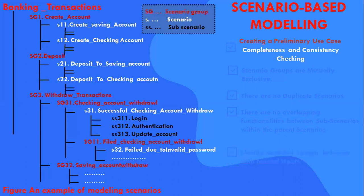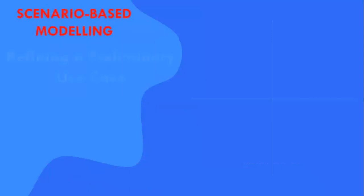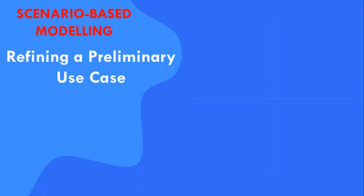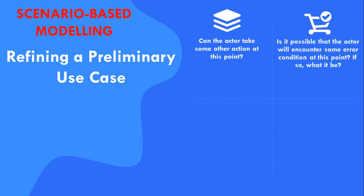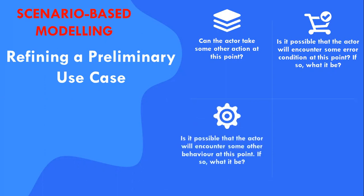Coming to refining a preliminary use case. A description of alternative interactions is essential for a complete understanding of the functions described by the use cases. Therefore, each step in the primary scenario is evaluated by asking: Can the actor take some other action at this time? Is it possible that the actor will encounter some error condition at that point? And is it possible that the actor will encounter some other behavior at this point? The answers to these questions result in the creation of a set of secondary scenarios that are part of the original use case but represent alternative behavior.